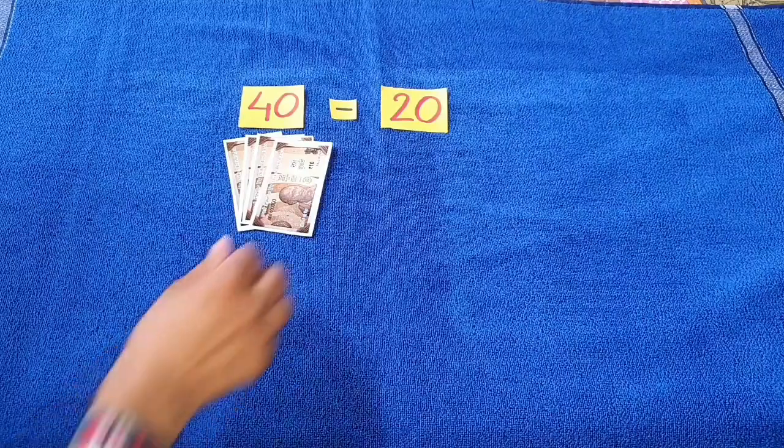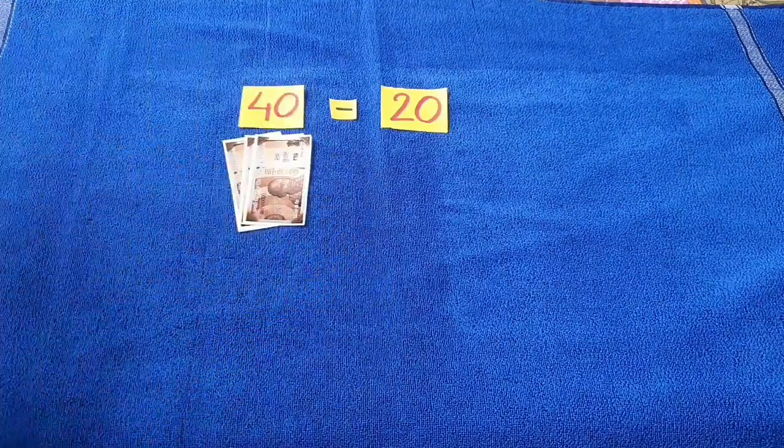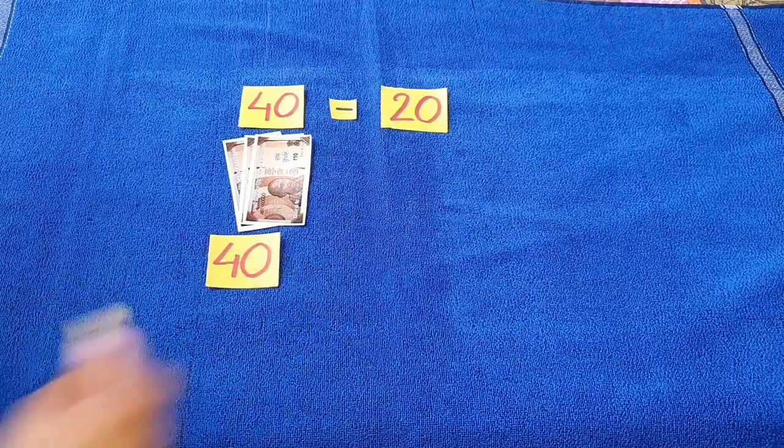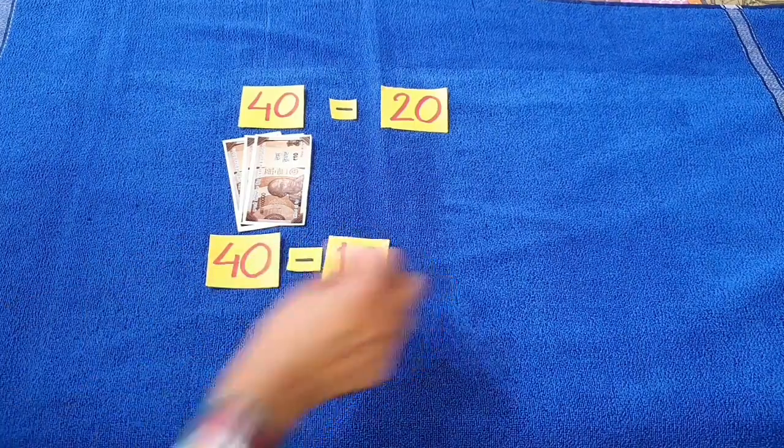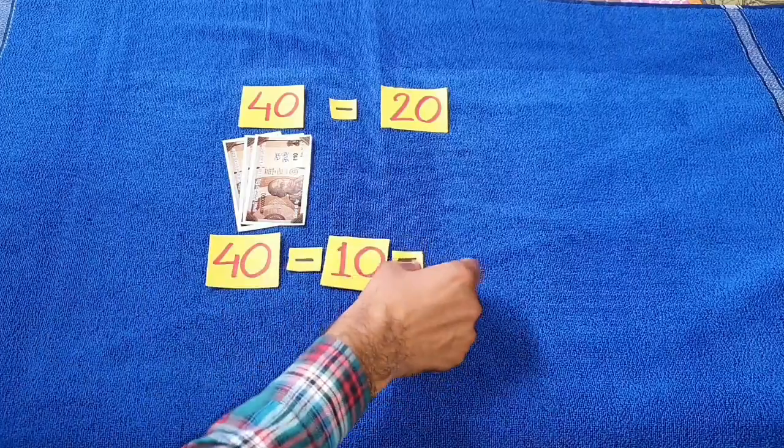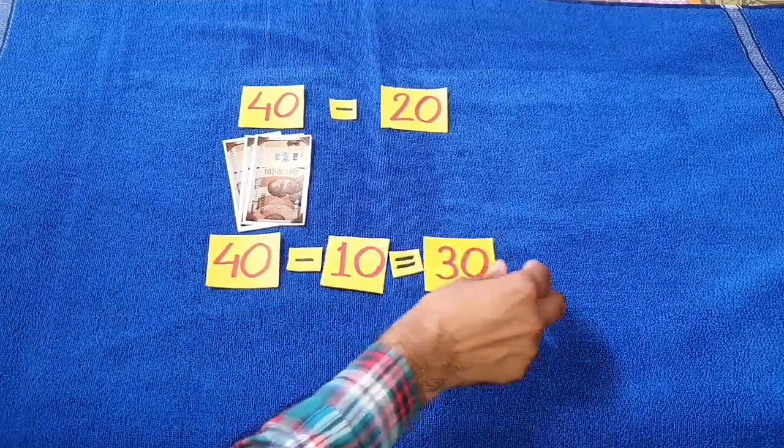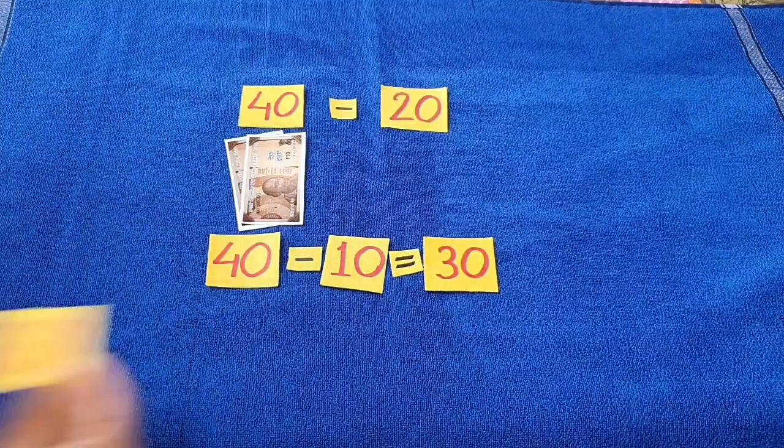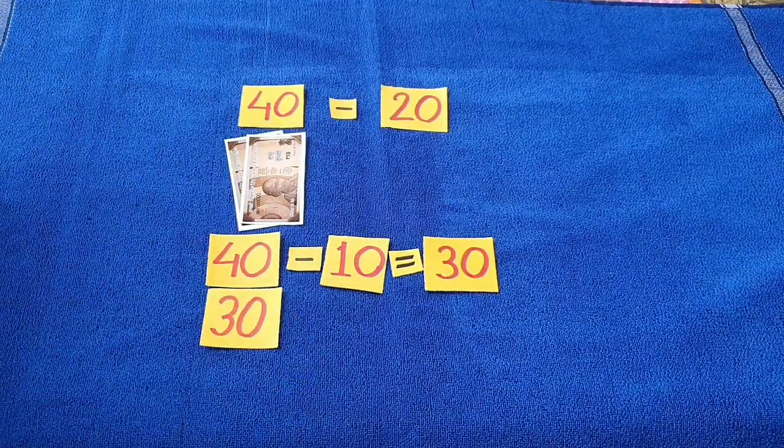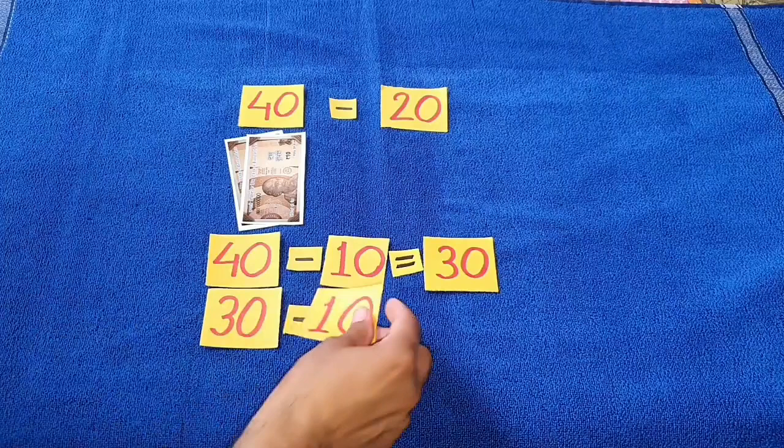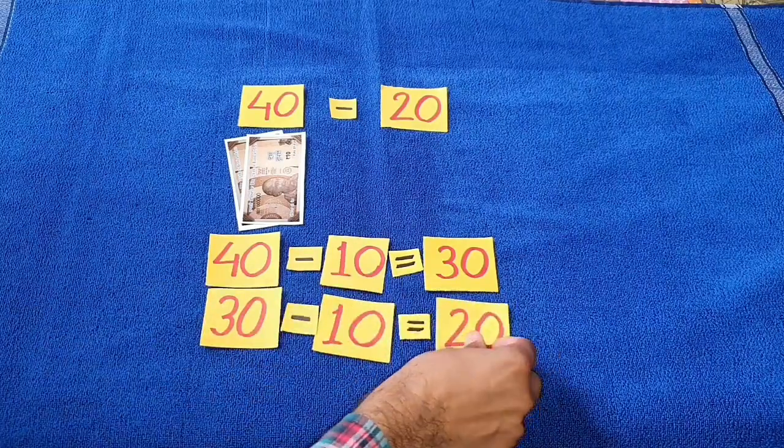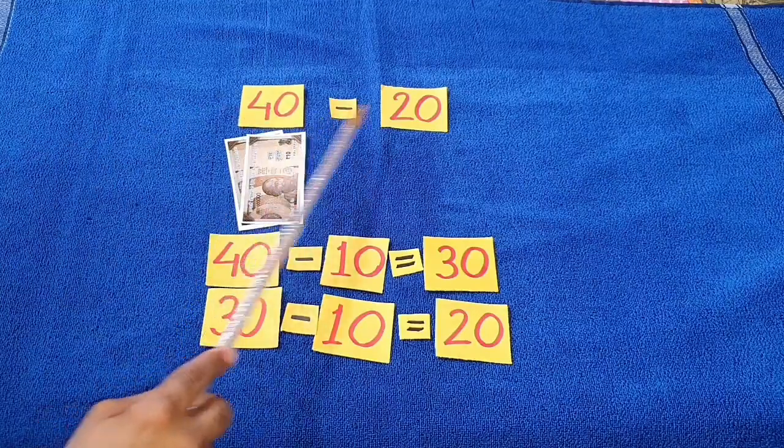We take away 10 rupees from 40 rupees. 40 minus 10 will be equal to 30 rupees. 40 minus 10 is equal to 30. Again, we take away 10 rupees. 30 minus 10 will be equal to 20 rupees. So, 40 minus 20 is equal to 20.